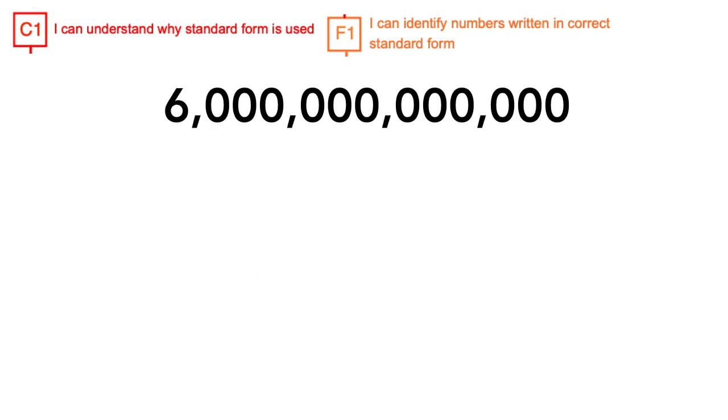For example, 6 trillion is a large number. Instead of writing all those zeros, we can represent this number differently that's easier to write.